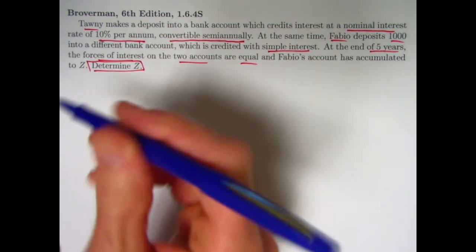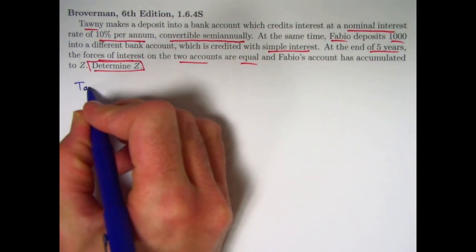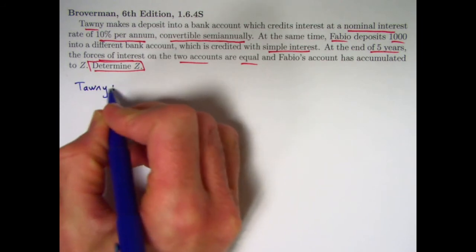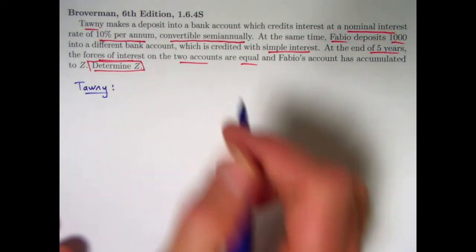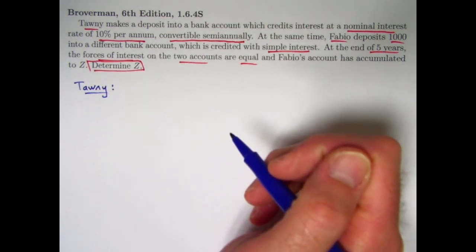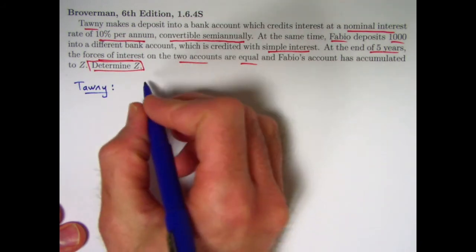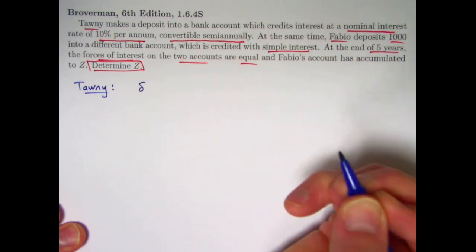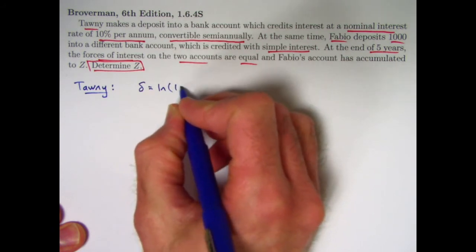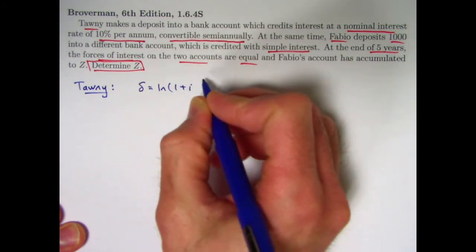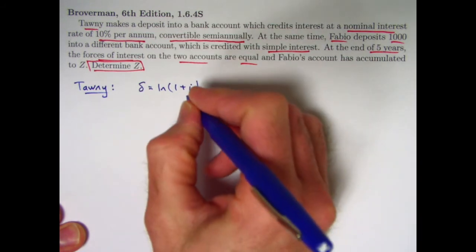So let's solve the problem first of all by assuming you've got the formulas for the force of interest in these situations memorized, and then, like I said, after we solve the problem that way, we'll go back and re-derive those formulas. When you have compound interest, first thing to realize is the force of interest is constant, and in fact, delta, the constant force of interest, is the natural log of the annual growth factor, 1 plus i, where i is the effective annual interest rate.